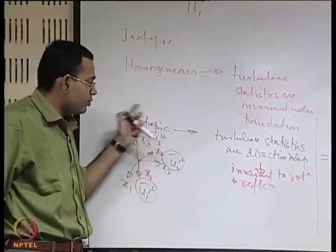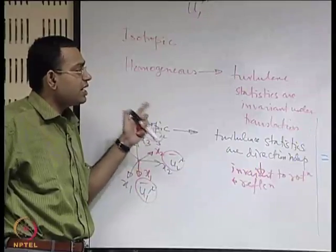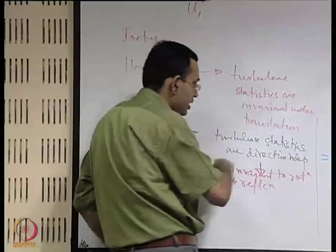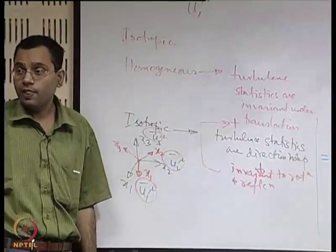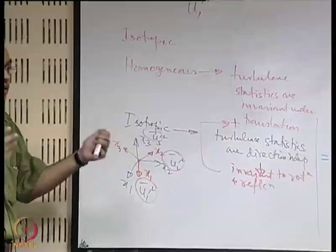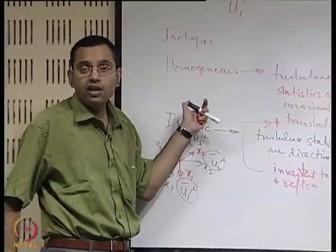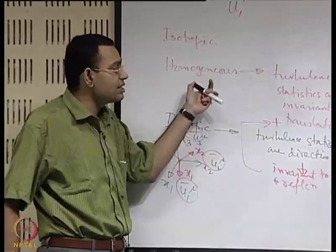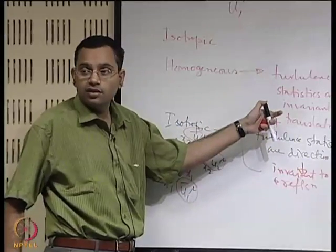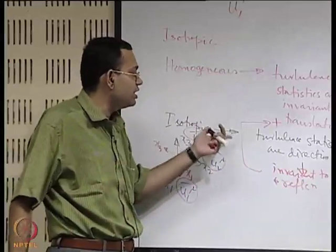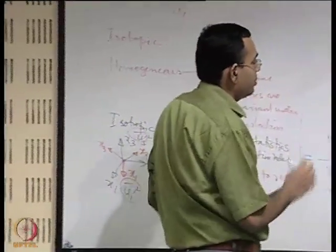From this, we may answer the question asked in the previous lecture: does homogeneous turbulence have to be isotropic, or does isotropic turbulence have to be homogeneous? We can clearly see that isotropic turbulence must be homogeneous because it also has to be translational invariant in its statistics. On the other hand, there is no guarantee that homogeneous turbulence will be isotropic. With this understanding of isotropy and anisotropy, we will now consider how ui-prime uj-prime terms are coming.